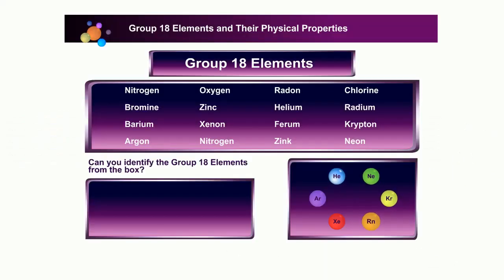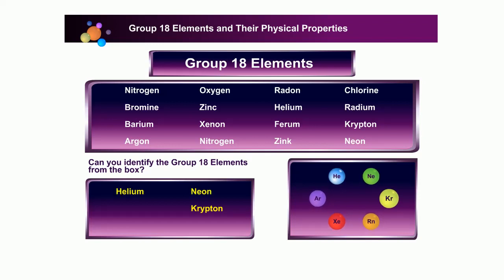Group 18 Elements are very useful in our daily lives. They make up almost 1% of the air. Can you identify the Group 18 Elements from the box of elements here? Click on the possible Group 18 Elements: Krypton, Neon, Helium, Xenon, Argon.